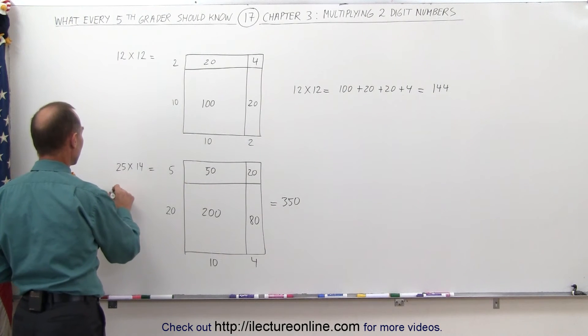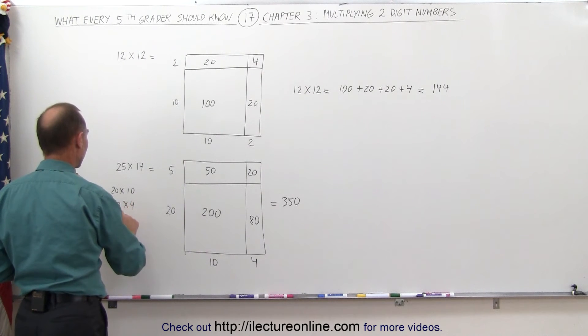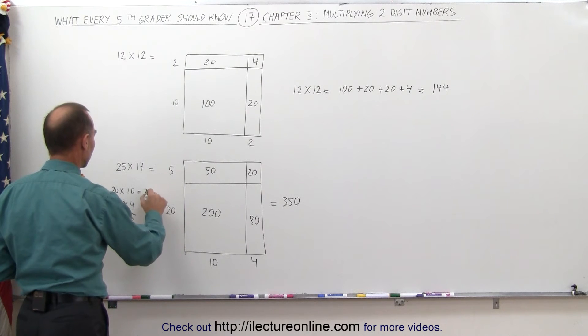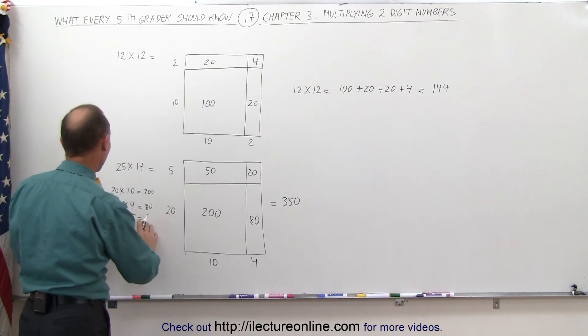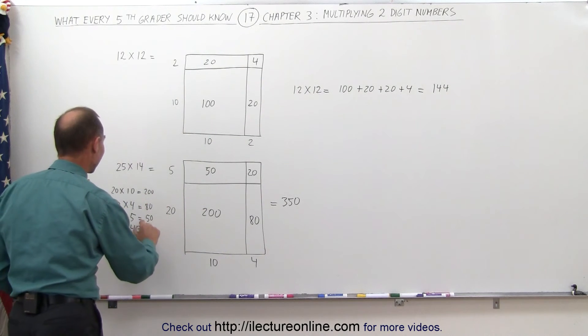when I see 25 times 14, really what I'm seeing is I'm seeing 20 times 10. I'm seeing 20 times 4. I'm seeing 10 times 5. And I see 5 times 4. When I add them all together, I get 200. I get 80. I get 50. And I get 20.